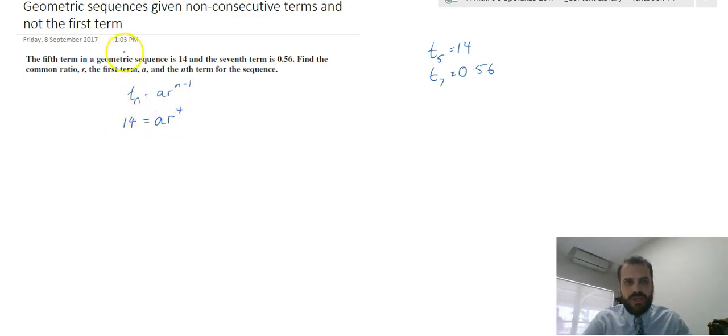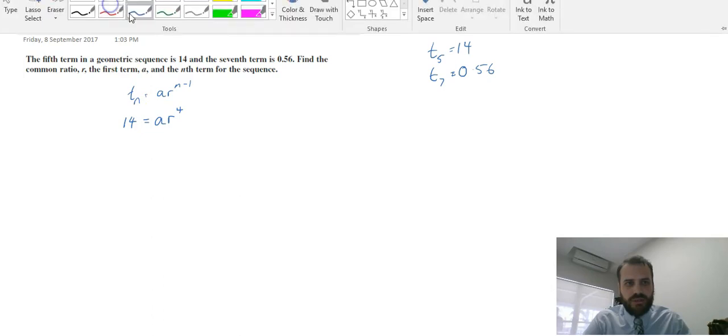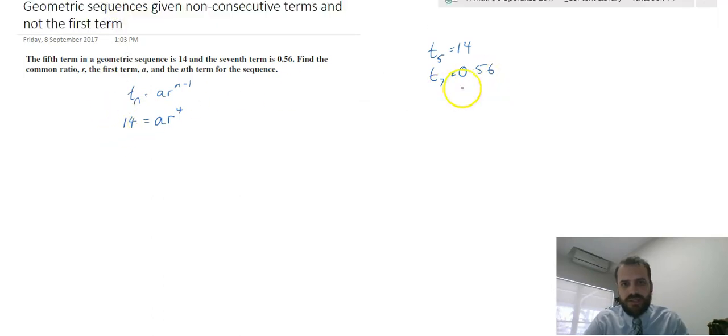So that's one of our equations. The other equation is going to be the seventh term, 0.56 equals ar to the 7 minus 1, that's 6. So now we just need to take these two equations and solve them simultaneously.